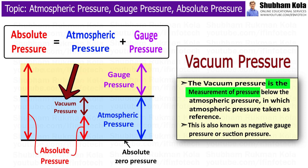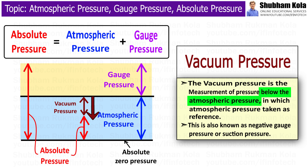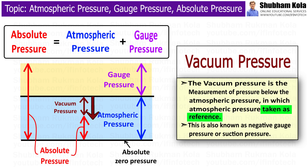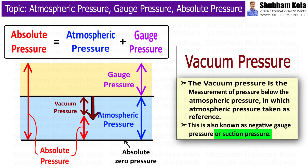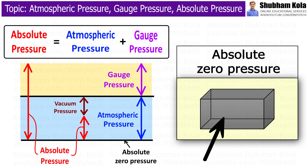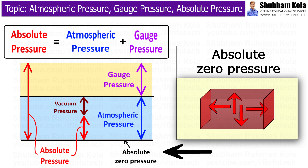The vacuum pressure is the measurement of pressure below the atmospheric pressure, in which atmospheric pressure is taken as reference. It is also known as negative gauge pressure or suction pressure. The instrument used to measure vacuum pressure is known as a vacuum gauge. If a container is completely evacuated, then the pressure exerted on the surface is zero. Such zero pressure is called absolute zero pressure or absolute vacuum pressure.